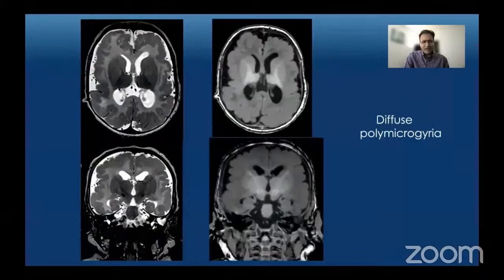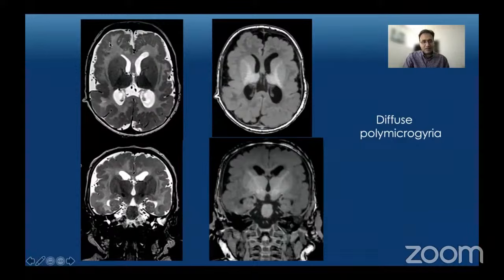This is an example of diffuse polymicrogyria in a young child presenting with infantile spasms. On T1 and T2-weighted MRI we see an abnormal gyral and sulcal pattern bilaterally: the gyri are abnormally wide, the sulci are shallow, and there is a nodular lumpy-bumpy appearance of the gray-white junction throughout. This is bilateral diffuse polymicrogyria.